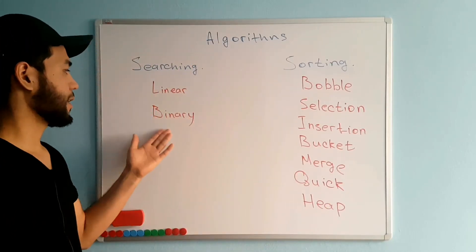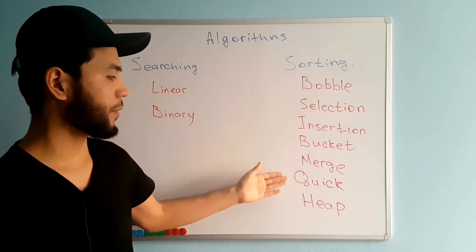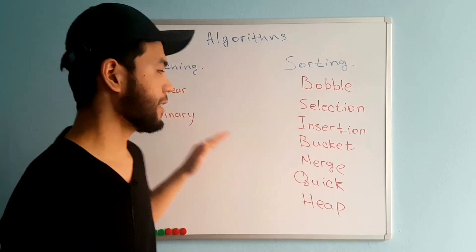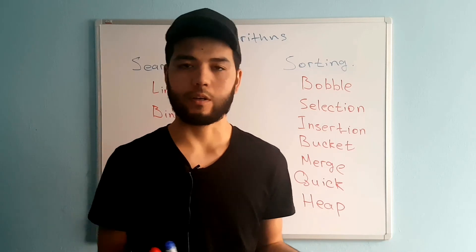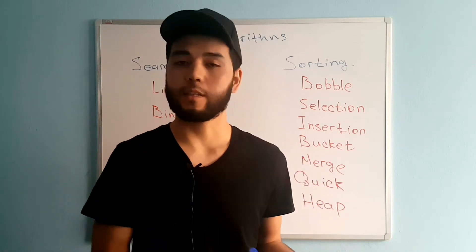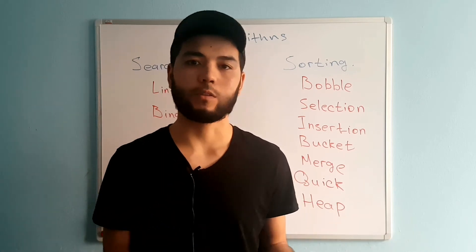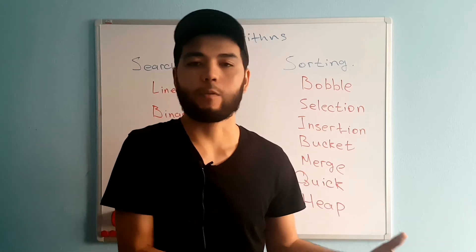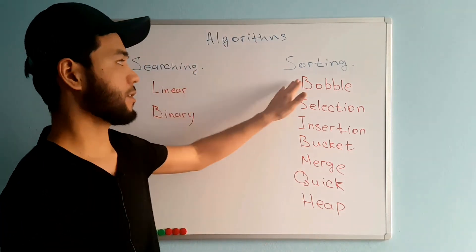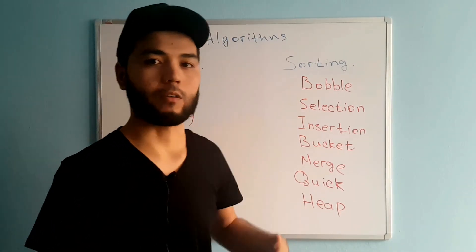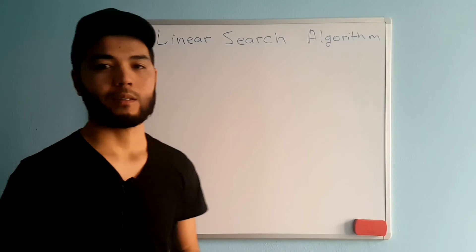For searching algorithms we have linear and binary search. For sorting algorithms we have bubble, selection, insertion, bucket, merge, and heap sort. In computer science there are also recursive algorithms, divide and conquer, greedy algorithms, and dynamic programming algorithms — and in machine learning there are more types. In this video we'll focus only on searching and sorting algorithms and implement each of them step by step.